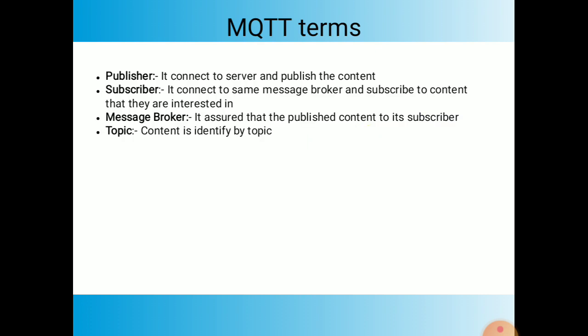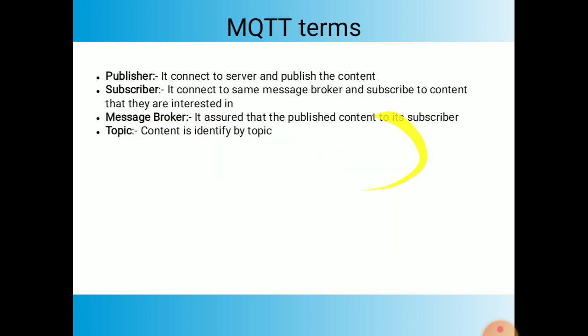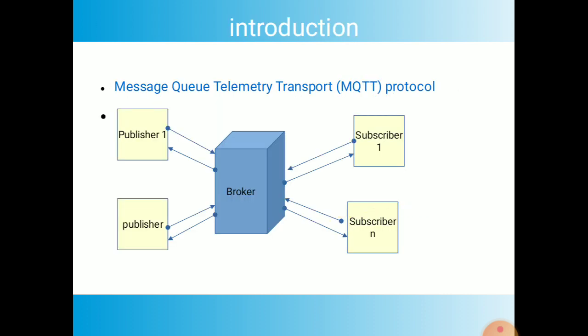There are three main MQTT terms: publisher, subscriber, and message broker. In simple terms: the publisher connects to the server and publishes content. The subscriber connects to the same message broker and subscribes to the content they are interested in. For example, if they want only temperature data and not humidity or other types, the subscriber subscribes only to the publisher generating temperature data.